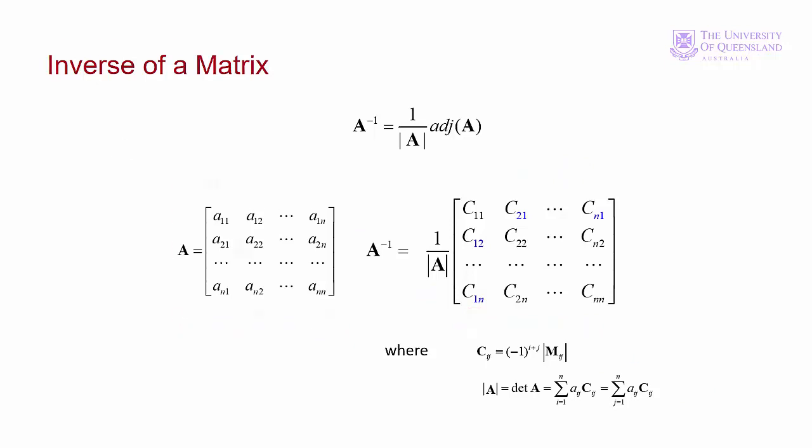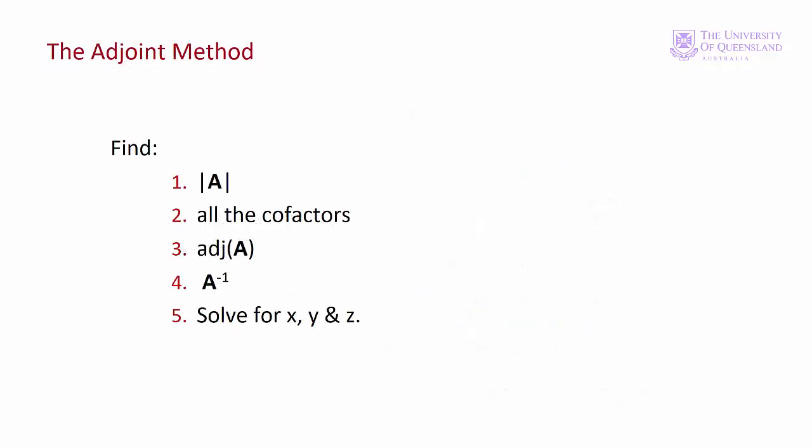Here we have a summary of the method of solving equations by finding the adjoint. First we find the determinant. Then we find all the cofactors and put them into the matrix of cofactors. We take the transpose to find the adjoint. We find the inverse of the matrix by dividing the adjoint by the determinant. Once we have the inverse, we can solve for x, y, and z.